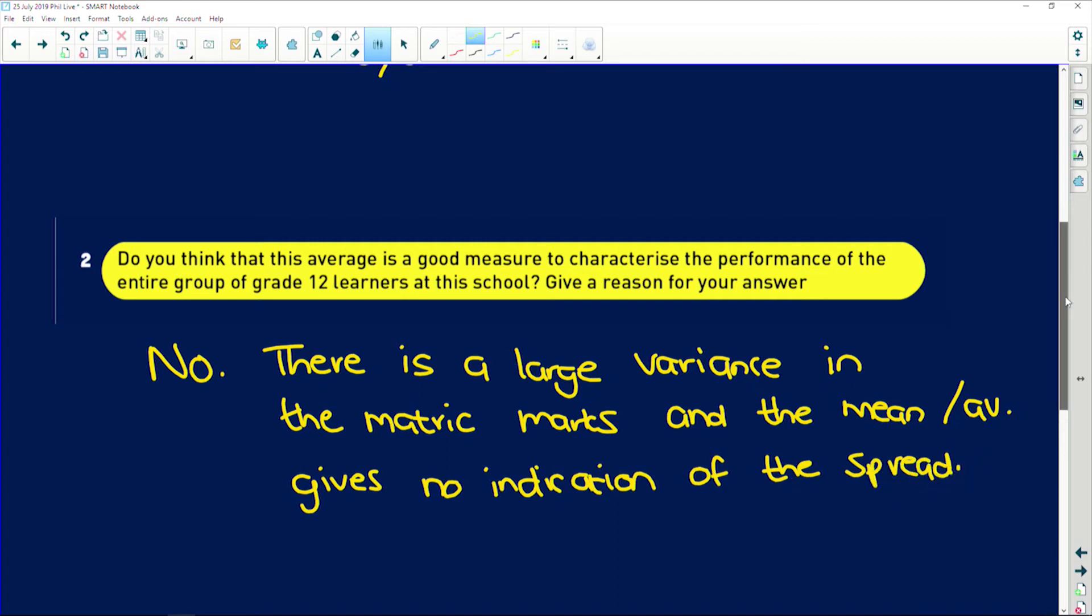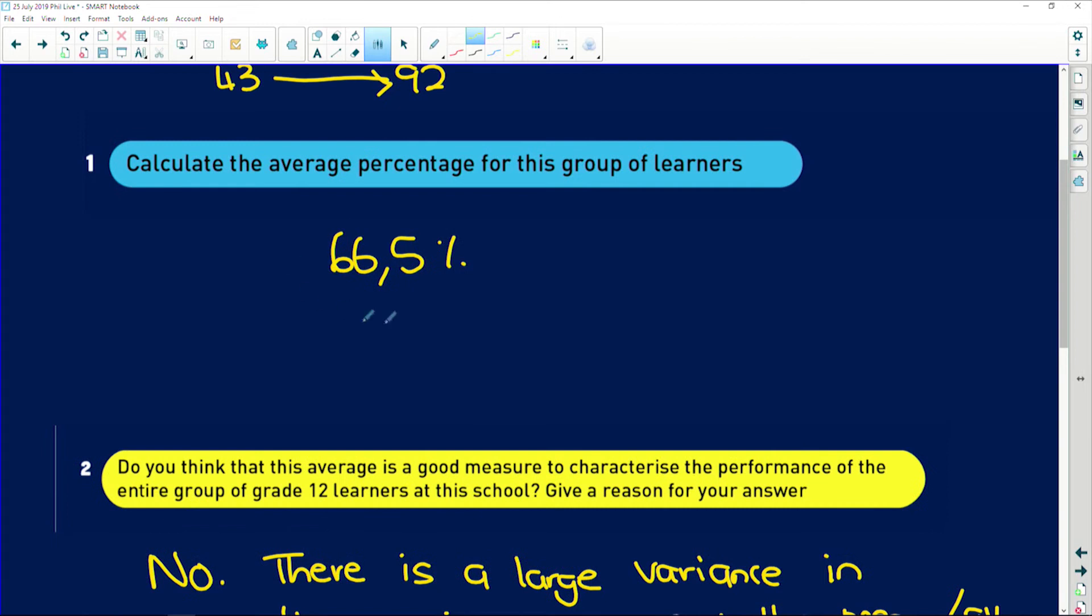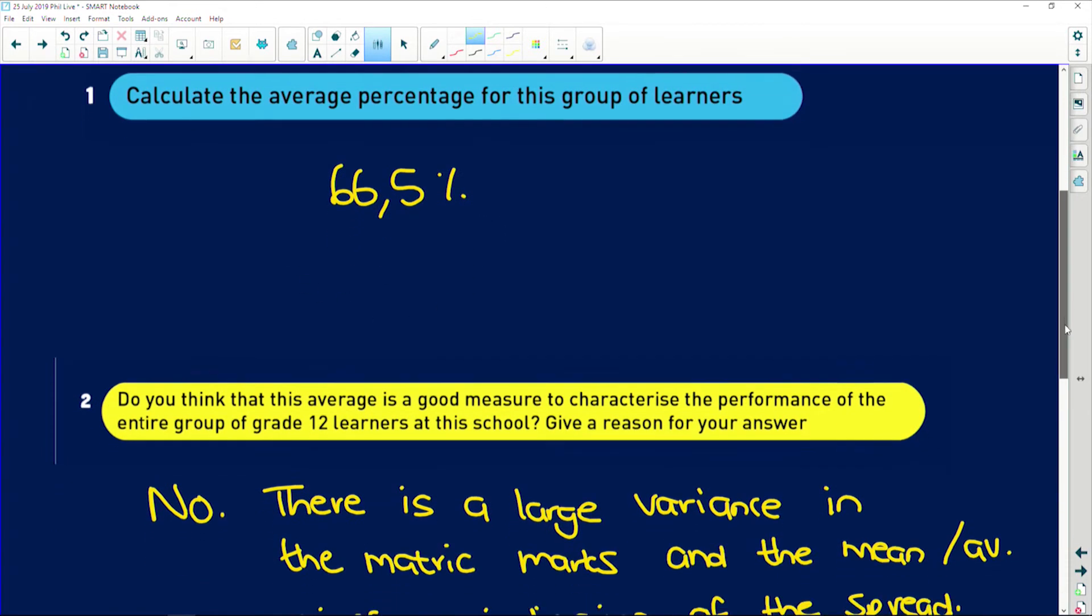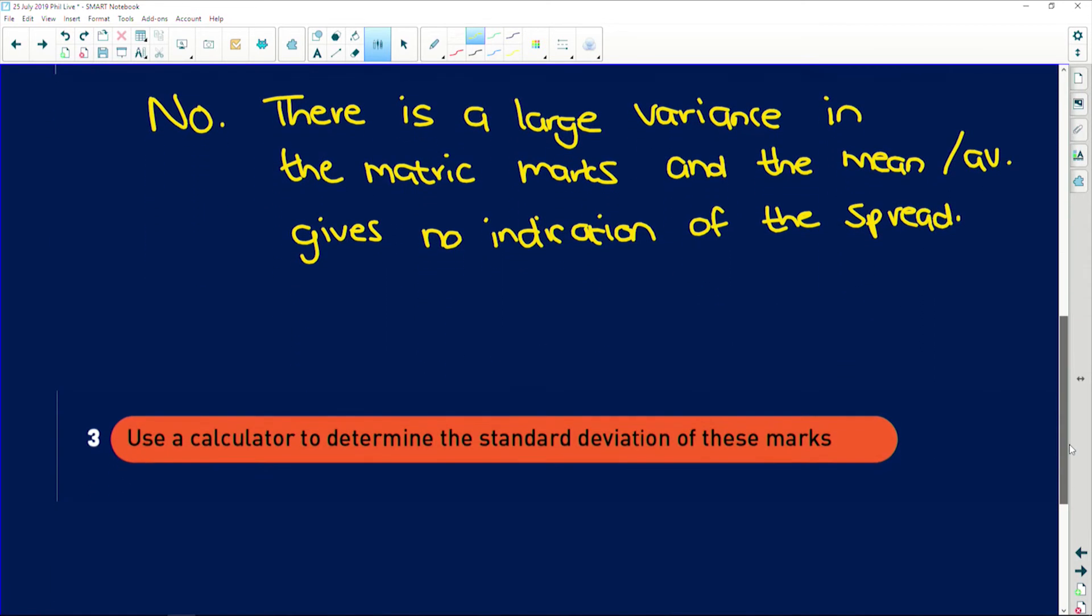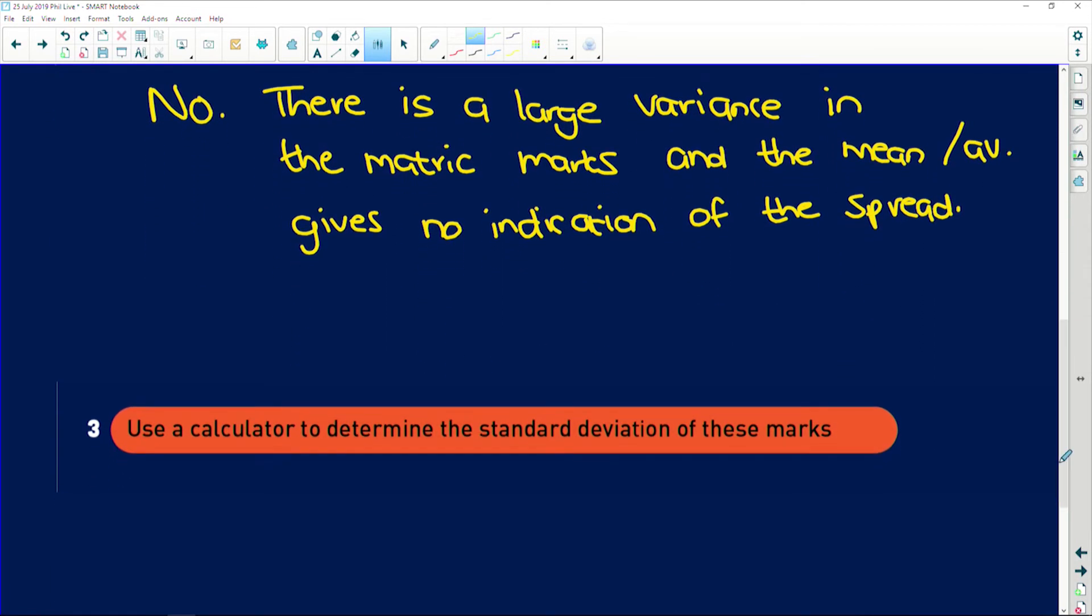Okay, so we're basically just averaging out the matrics and saying they got an average of almost 67 percent, when in actual fact, they're ranging from 43 to 90, which is a big variation.